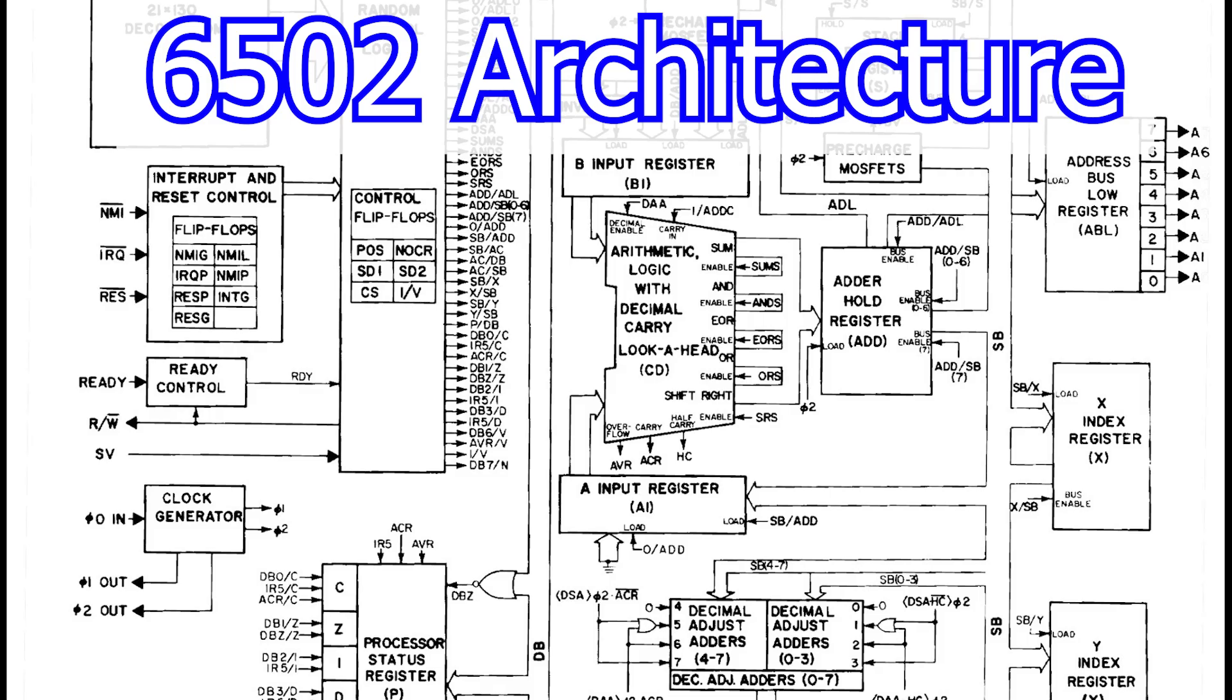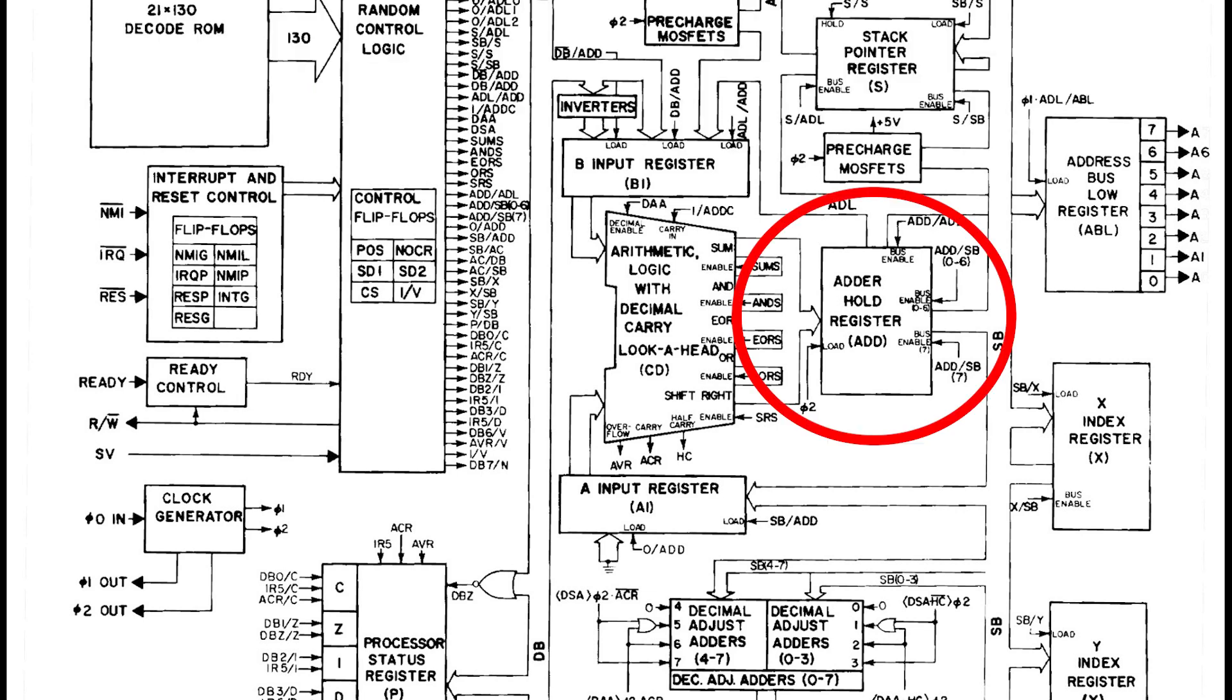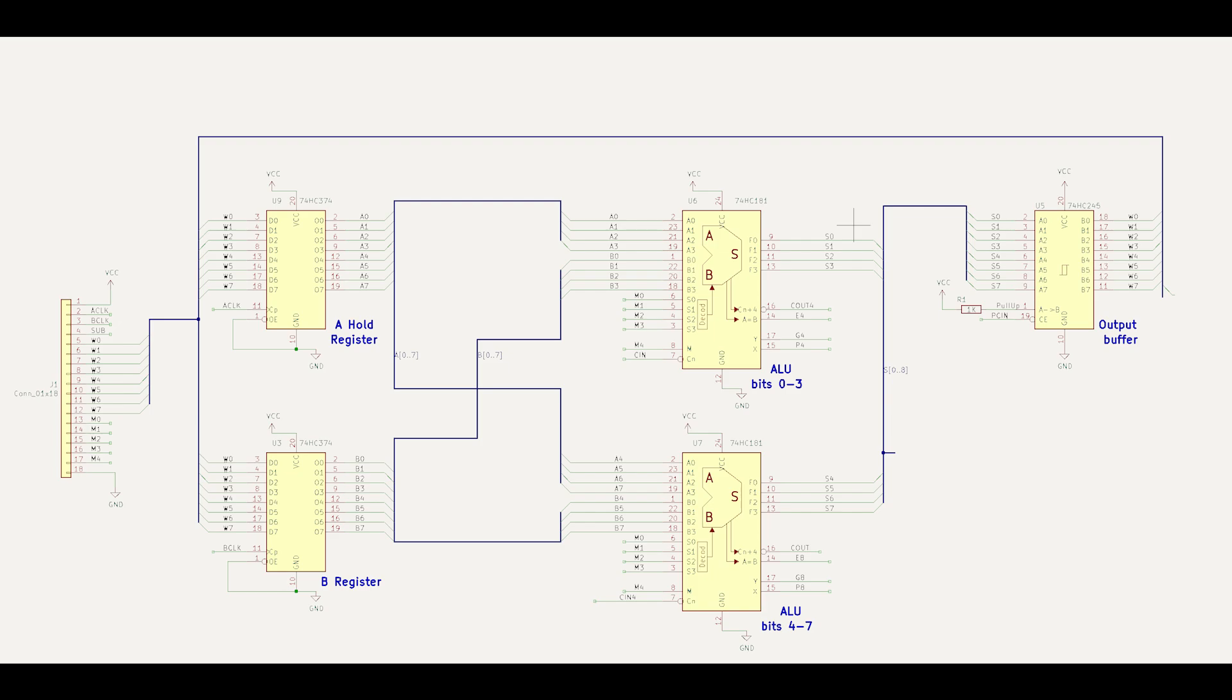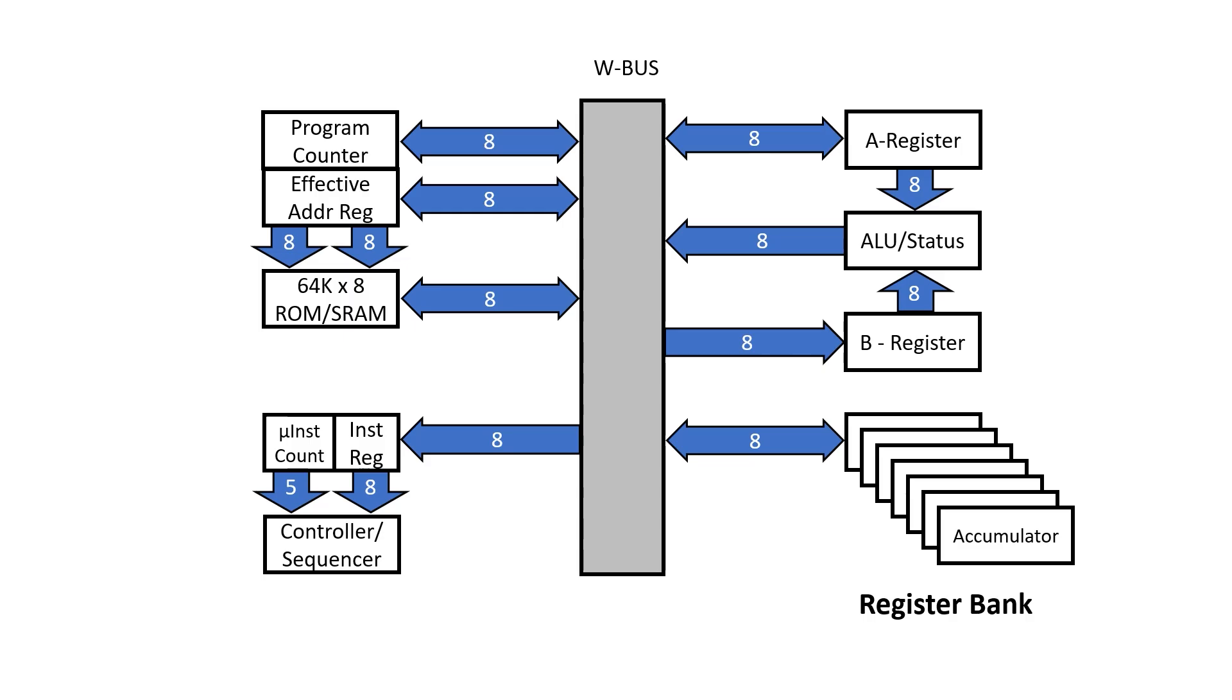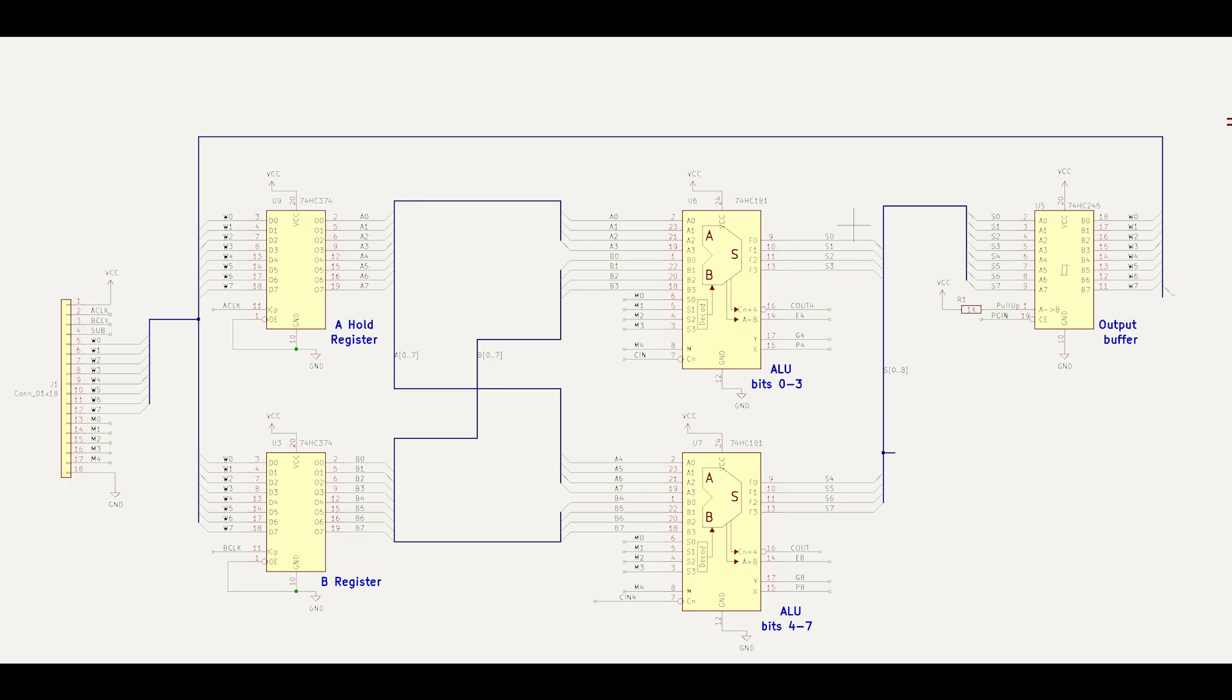Now, this is where this architecture varies a little bit from the 6502. Instead of storing the output from the ALU directly in a register, we just use the 74HC245 buffer, which lets the output go back into the W bus and into its destination. This may be another register, or even our domain memory. This is our basic architecture for the ALU in this design. It's actually quite straightforward, because the 74HC181 is doing most of the work.